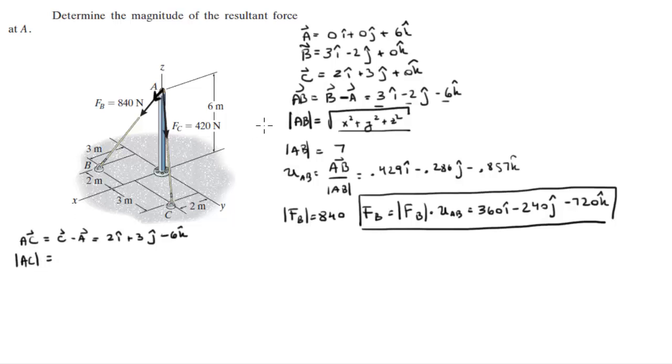Now you're gonna find the magnitude of AC just like you did here, and it comes out to be seven again. Now the unit vector AC is found by dividing the vector AC by its magnitude.